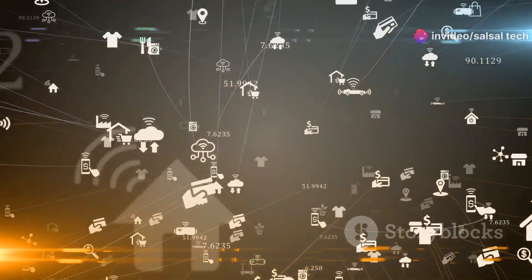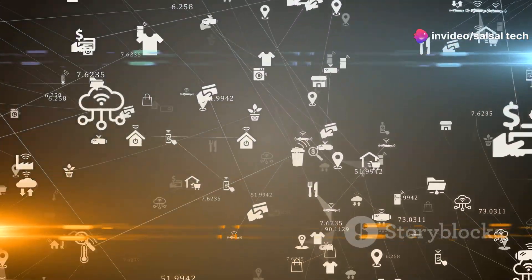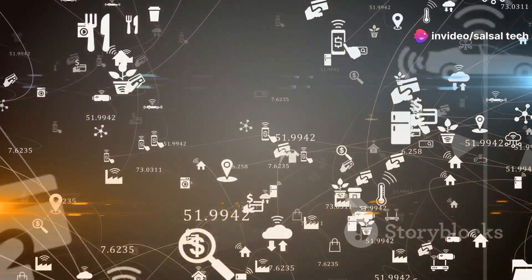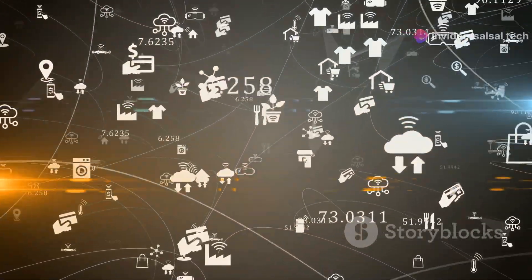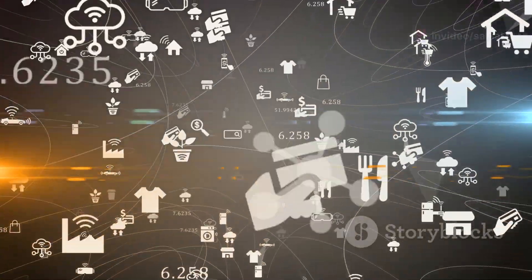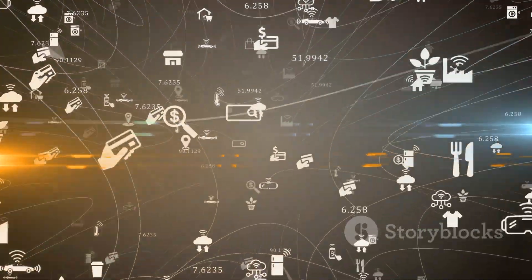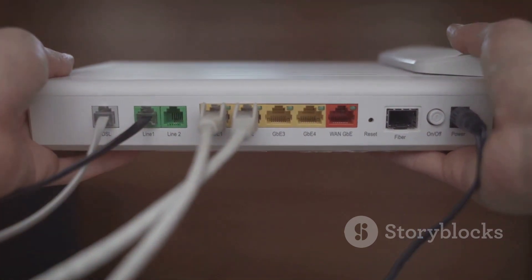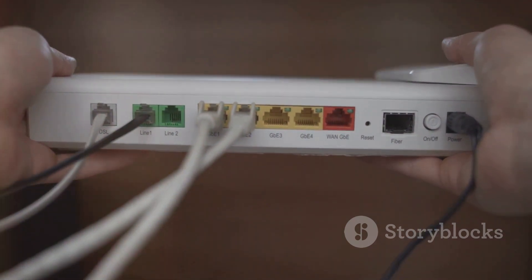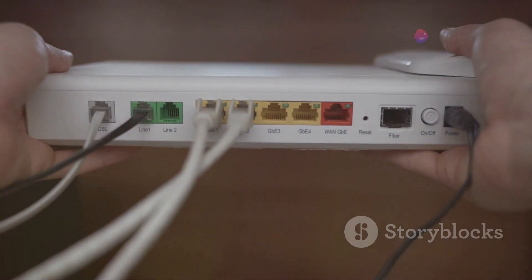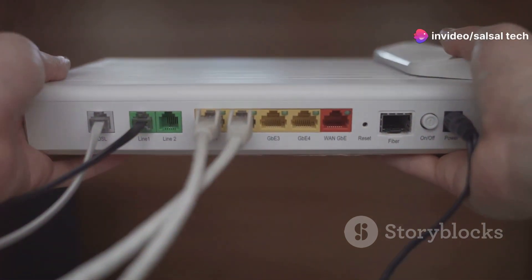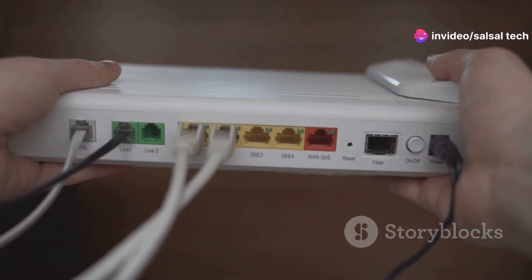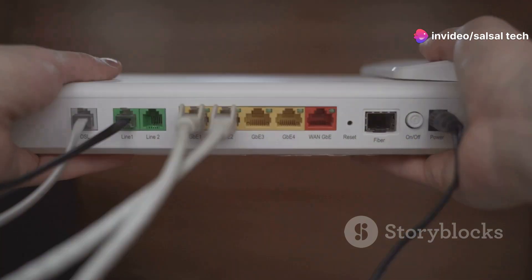For example, the Create Connection command instructs the MG to establish a new connection between two endpoints, enabling a new communication session to begin, while the Modify Connection command allows for adjustments to be made to an existing connection. This flexibility is essential for adapting to changing communication needs.